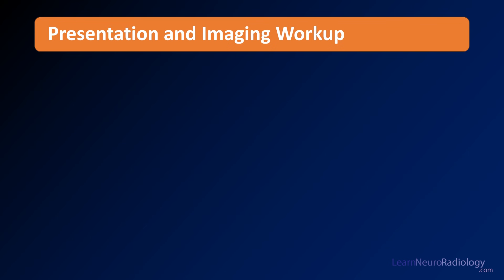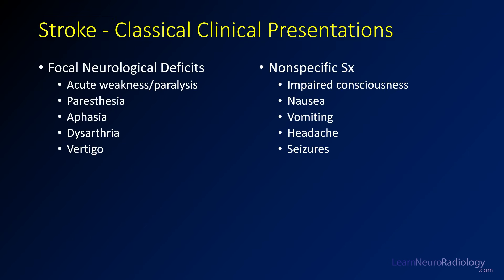When thinking about the presentation of stroke, you want to consider the clinical features. Stroke presents with focal neurologic deficits — that can be acute weakness, paresthesias. A lot of times you have aphasia if the vocal centers of the brain are affected, dysarthria or trouble speaking or making words, and vertigo, particularly in a posterior fossa stroke. Very nonspecific symptoms are less likely to be stroke, but sometimes you will get loss of consciousness, nausea, vomiting, headache, or seizure.